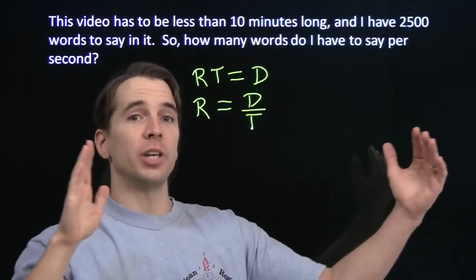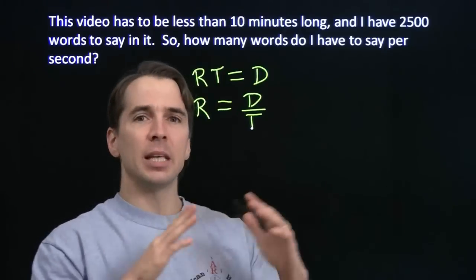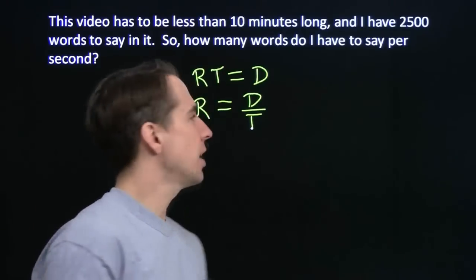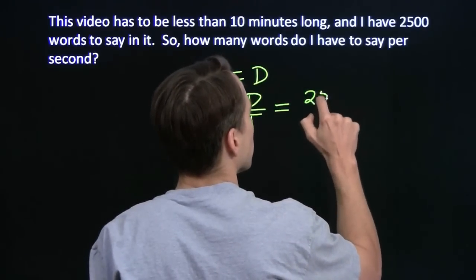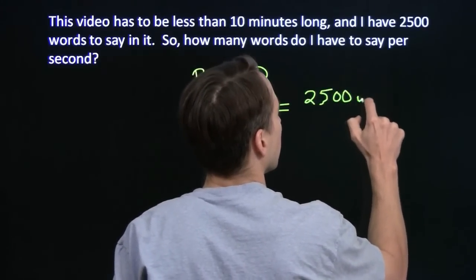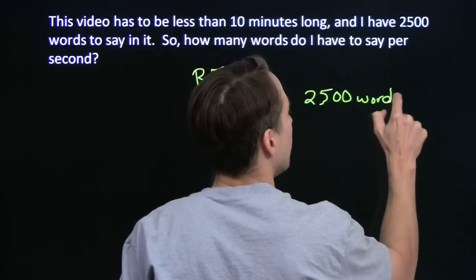My distance is how many words I have to say. My time is how much time I have to say it in. So my distance here, of course, is 2,500 words. And my time is 10 minutes.